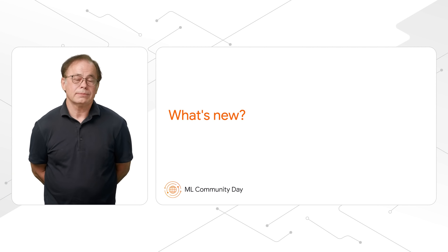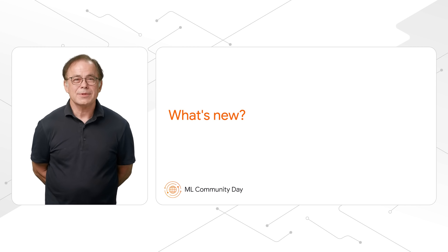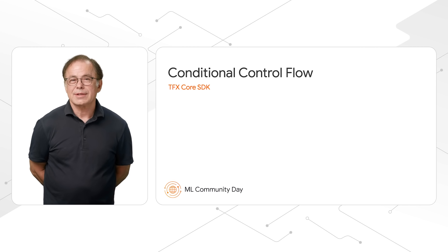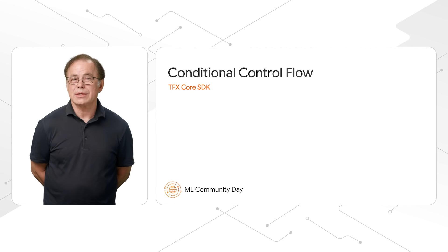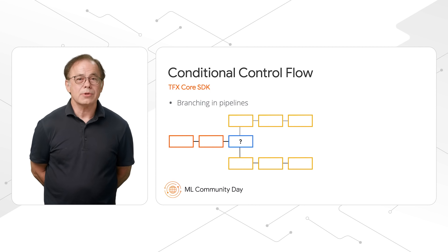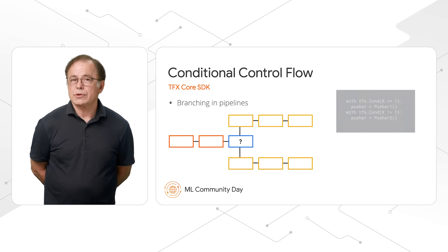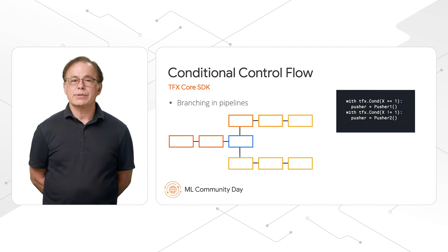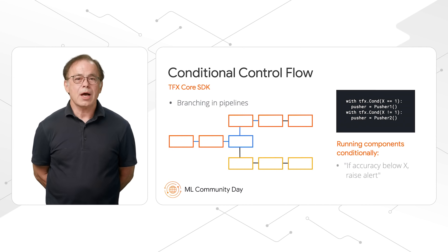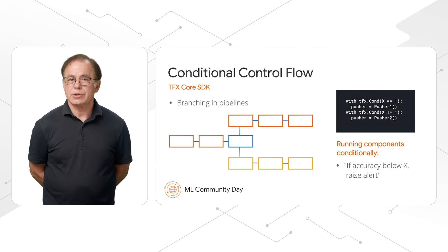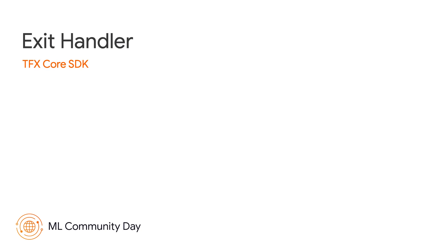Okay, so that's TFX. But what's new? We've only got 10 minutes, so let's look at a few highlights. First, there's new stuff in the core TFX SDK, starting with conditional control flow. You can now test and branch, or run optional components based on the current state of pipeline artifacts. A good example here is that if you're training a model and the accuracy falls below a certain threshold, you can optionally run an alerting component so that your team is aware of the situation.